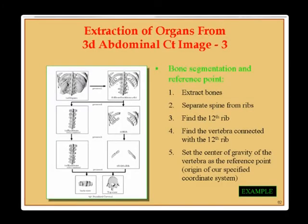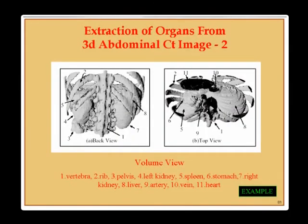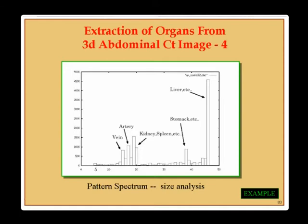Here are examples from Robarts Research Center in London, Ontario, Canada, showing organ extraction from a 3D abdominal CT image. Visible structures include vertebrae, ribs, and other labeled organs shown in a volume view. Bone segmentation extracts bones, separates the spine from the ribs, finds the twelfth rib as a reference, locates the vertebra connected to it, and sets the vertebra's center of gravity as the coordinate system origin.